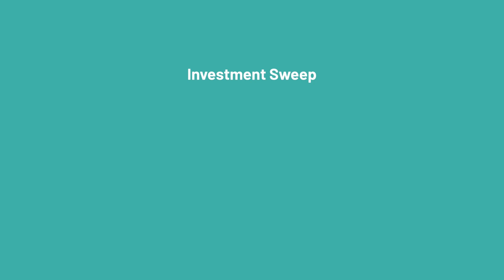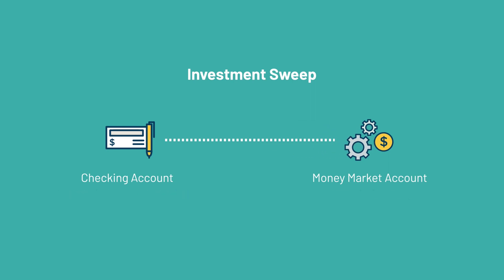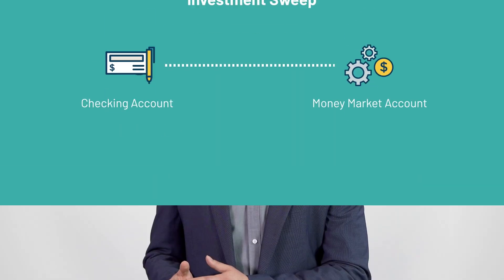With an investment sweep, your checking account is linked to an interest-paying account, such as a money market account. When your checking funds exceed a target balance, the extra funds are swept to your interest-paying account, where they can generate earnings for your business. When your checking balance dips below a given amount, funds are automatically swept back so you can cover your expenses.